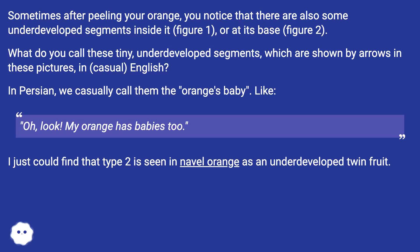In Persian, we casually call them the orange's baby. Like, "Oh, my orange has babies too." I just could find that type 2 is seen in navel oranges as an underdeveloped twin fruit.